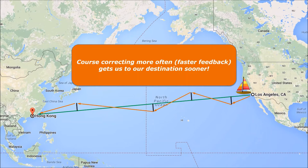Getting feedback faster allows us to course correct more often, which allows us to get there sooner. How does that relate to our projects? We plan what we're going to do to the best of our ability, then the project happens — a test fails, a supplier can't produce a part within spec, whatever. Life happens. We have great intentions but we'll learn along the way, and all kinds of things will try to derail the project. Getting feedback faster is really at the heart of it.